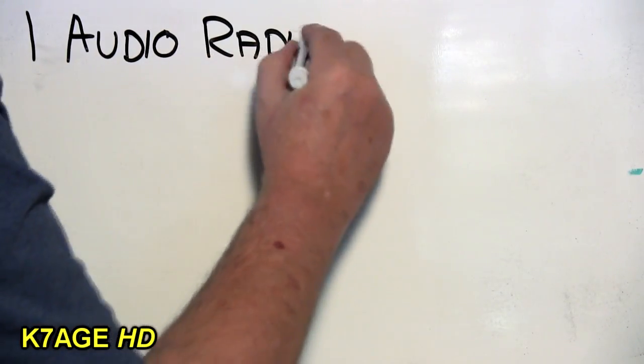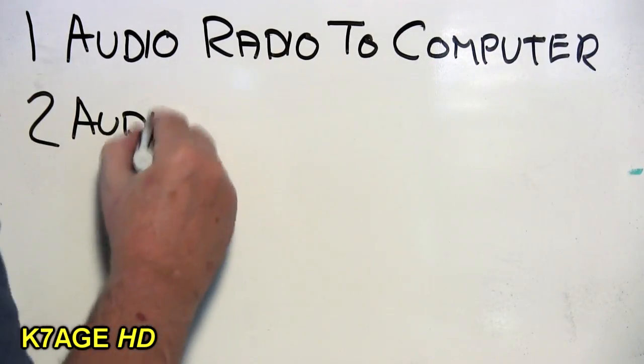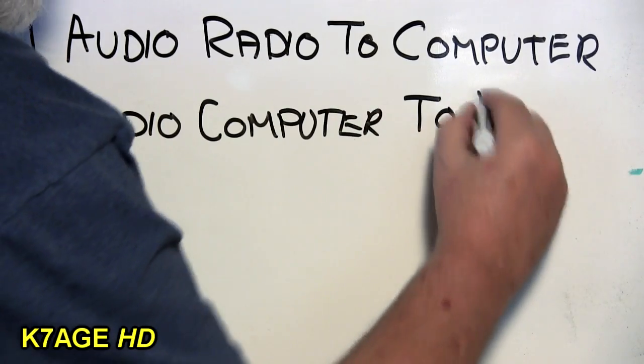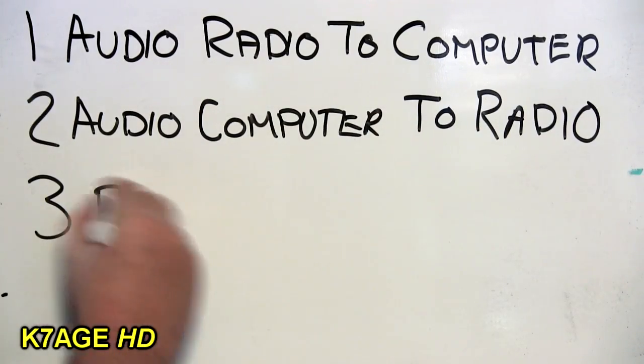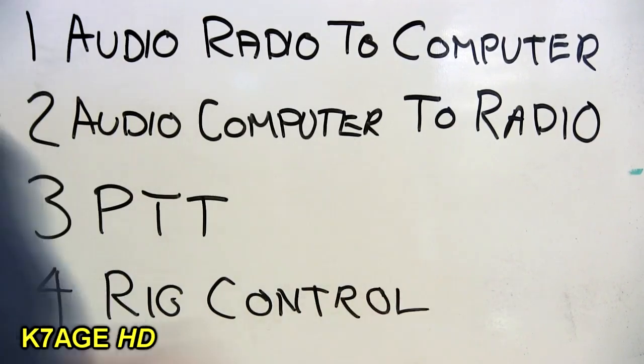Four things to think about. Number one is the audio from the radio to the computer. Number two is audio from the computer to the radio. Number three is push to talk. How you will place the transmitter and transmit. Number four is rig control. It's nice and it's optional.